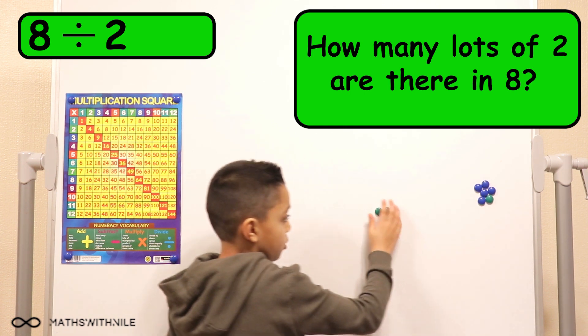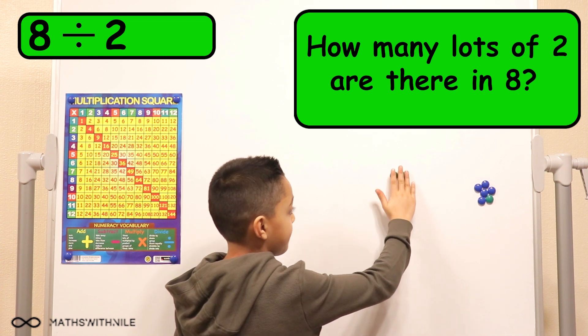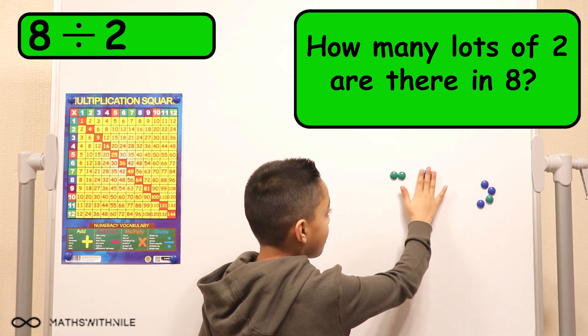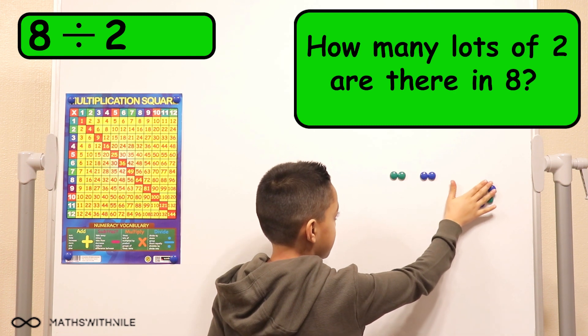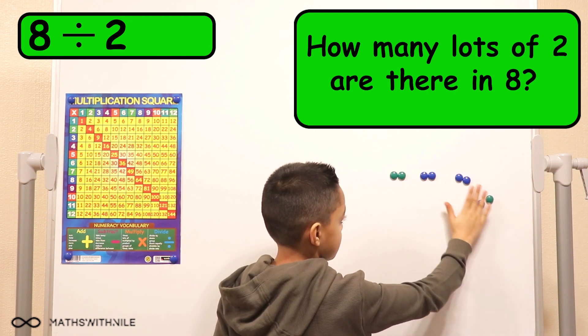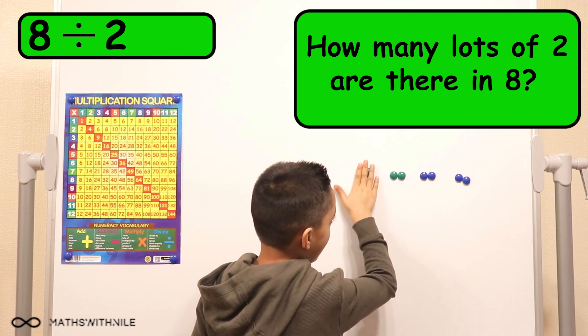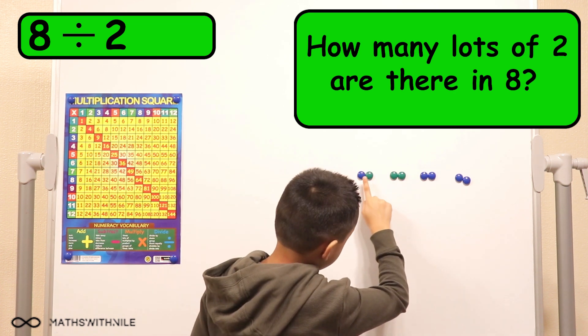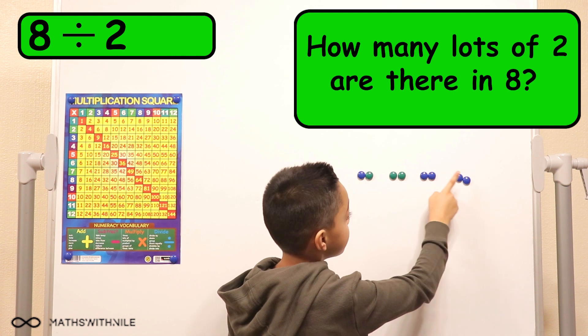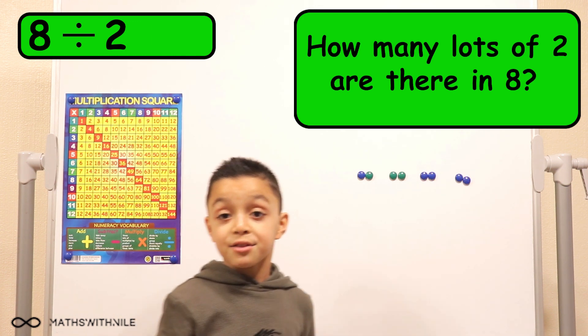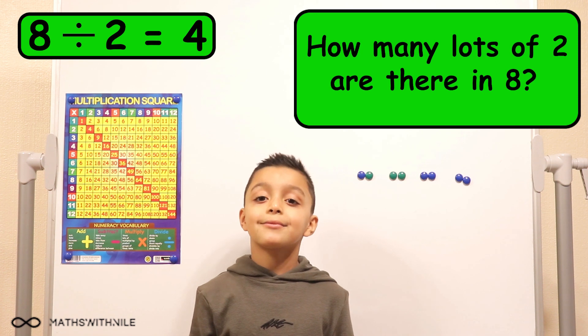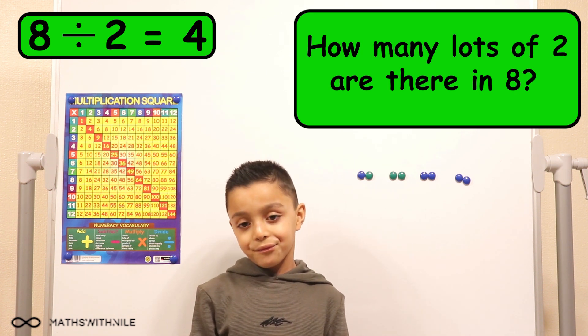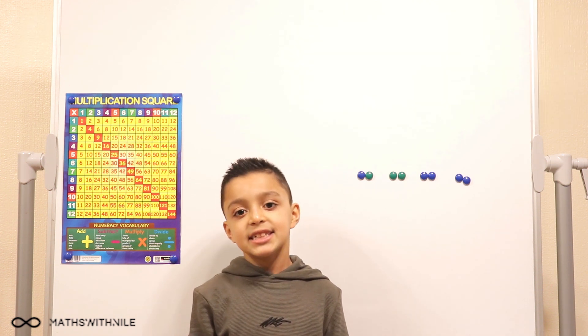So can you use the counters there to show us eight divided by two and then give us the answer? So we'll be doing how many lots of two are in eight. So I'll put them in groups like this. And how many groups do we have? Let's check. One, two, three, four. So that means eight divided by two equals four. Very good. So that's what division means, putting it into groups. Yes.